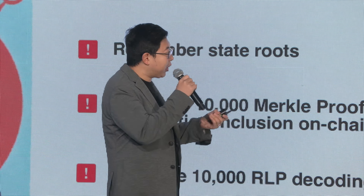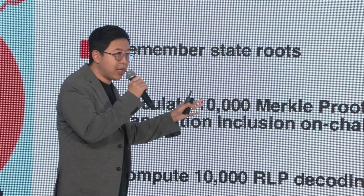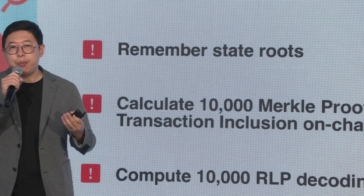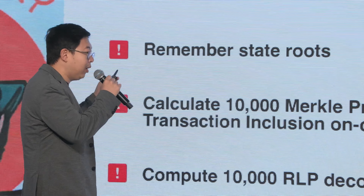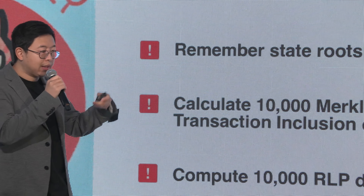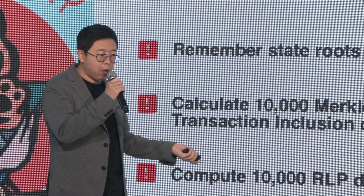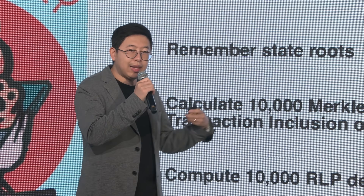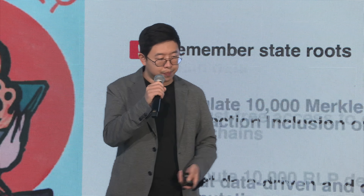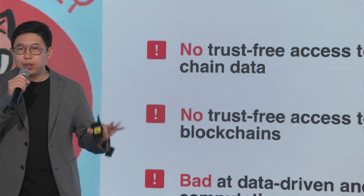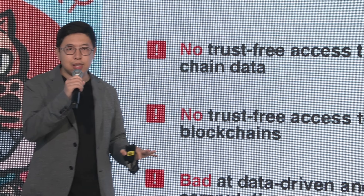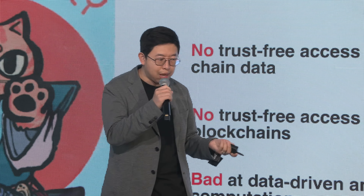So why is that? Because on-chain computation is really bad at dealing with this type of data-heavy computation. You need to calculate 10,000 Merkle tree proofs and compute all the receipt decoding on-chain and aggregate that in a single proof. So what we have here is a fundamental limitation in on-chain computing: there is no trust-free access to historical on-chain data for a smart contract.